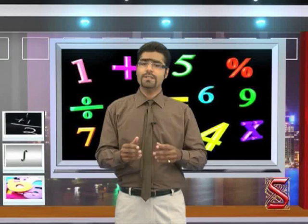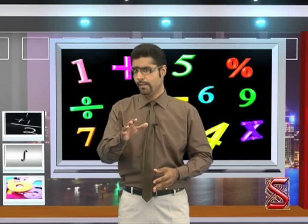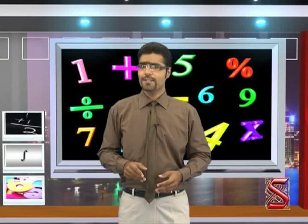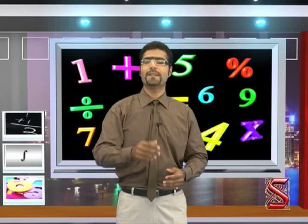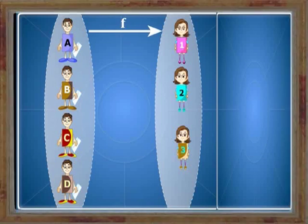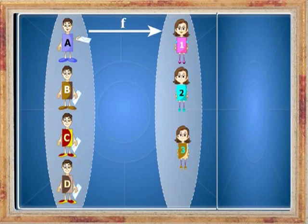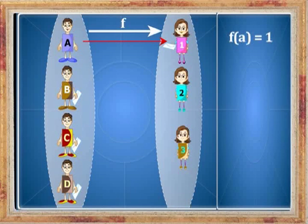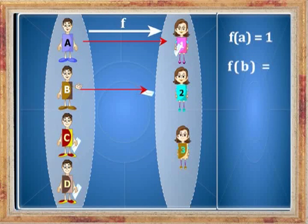Now let us learn about the different types of functions. Just for fun, let us assume ourselves to be mathematicians and learn things in a more mathematical way. So mathematically we can represent this as f of a is equal to 1, and similarly for other elements also: f of b is equal to 2, f of c is equal to 3.